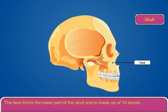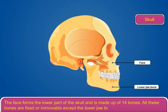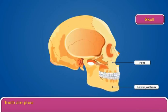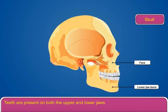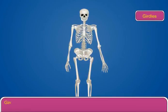The face is made up of 14 bones. All these bones are fixed or immovable, except the lower jaw bone which is movable. Teeth are present on both the upper and lower jaws, and the face has two sockets for the eyes.